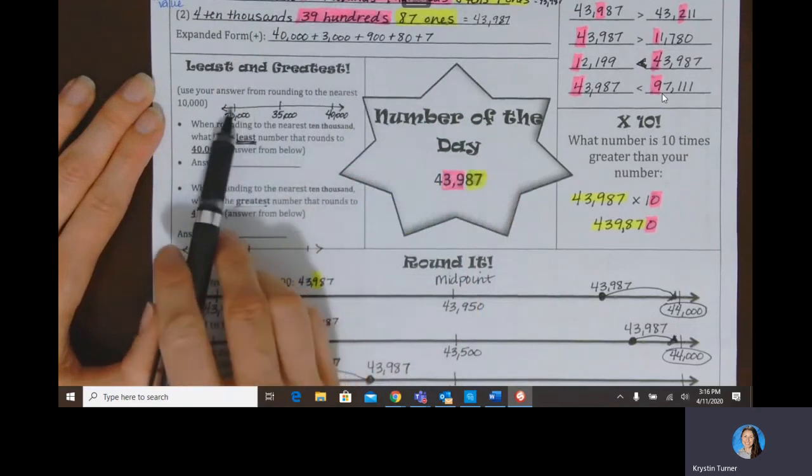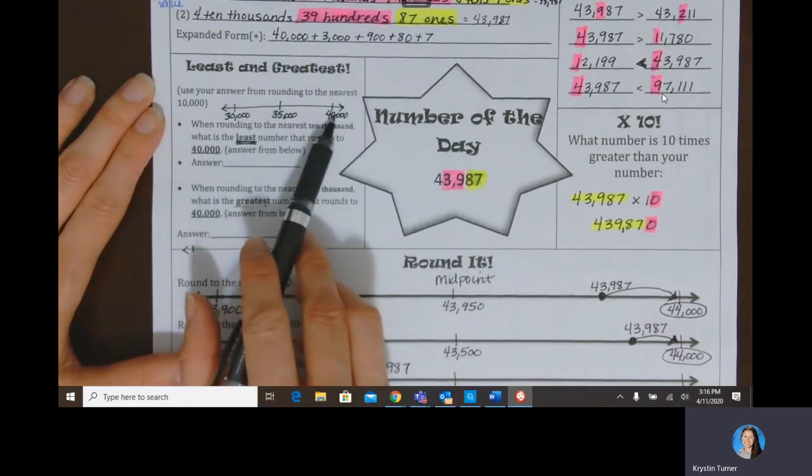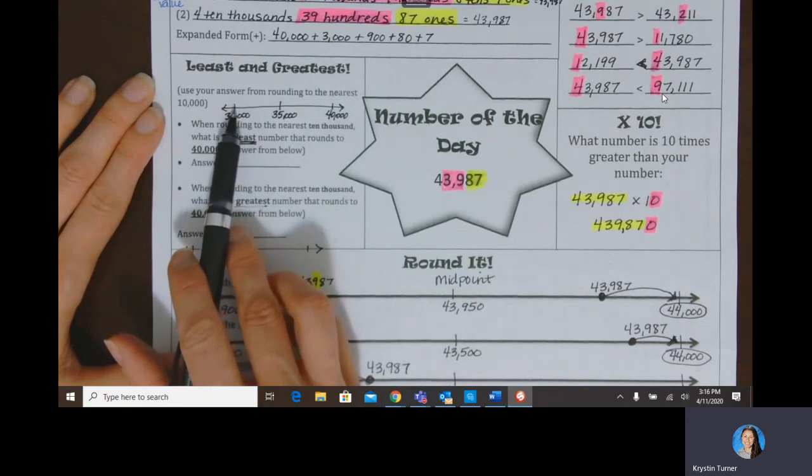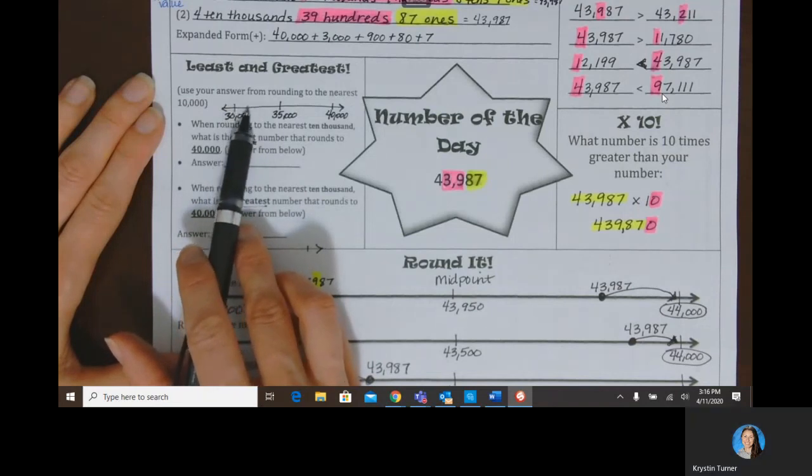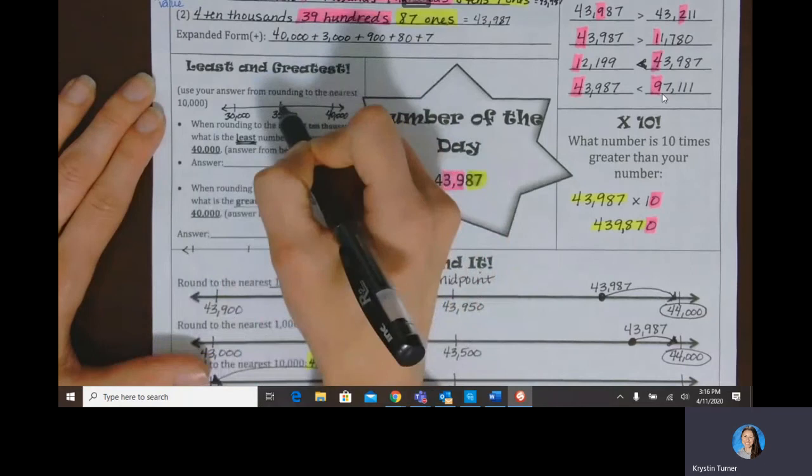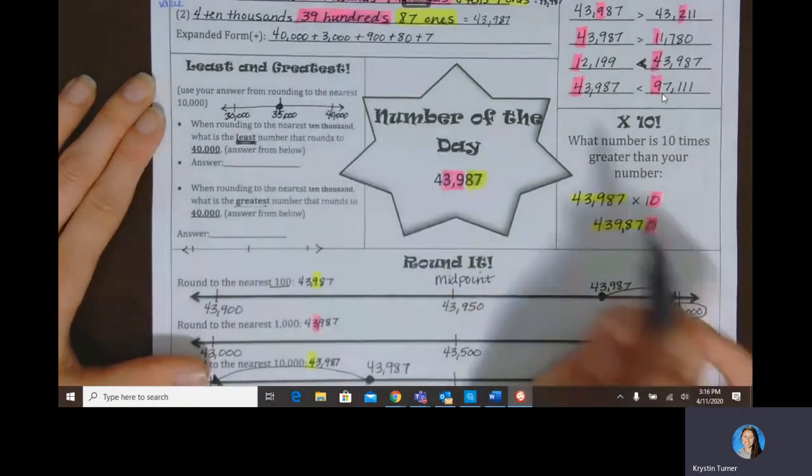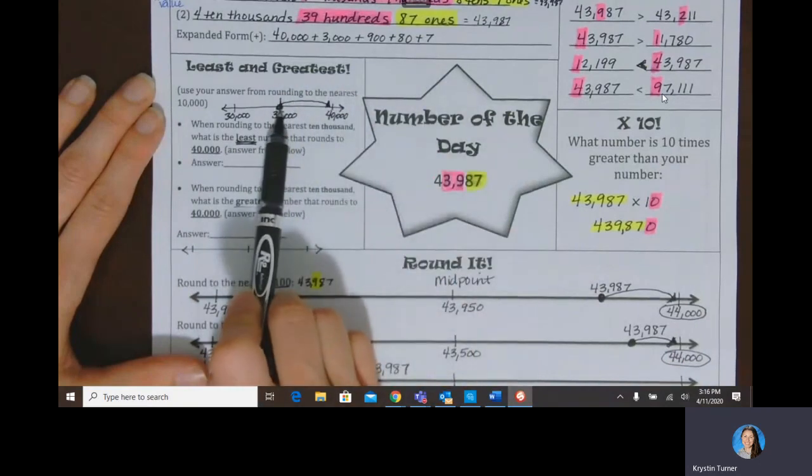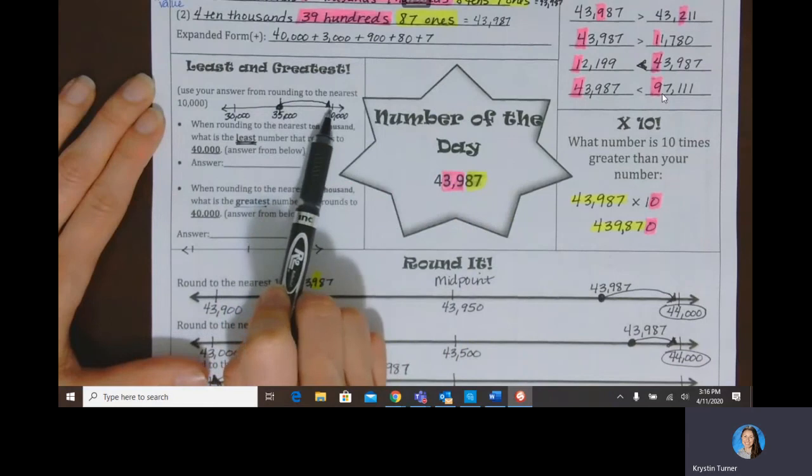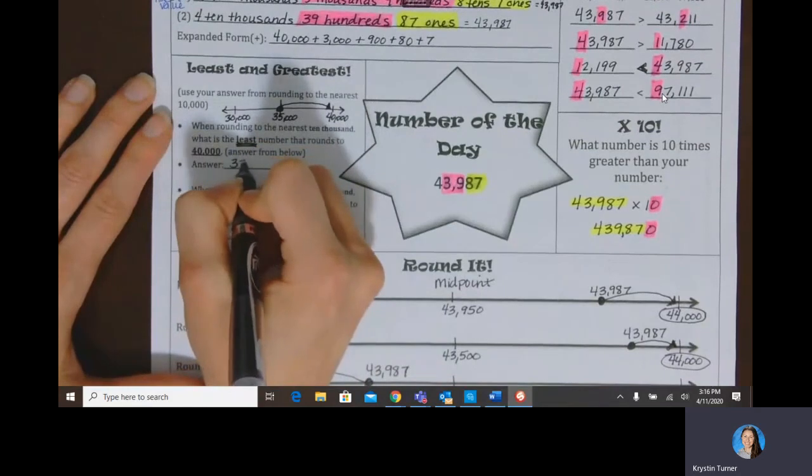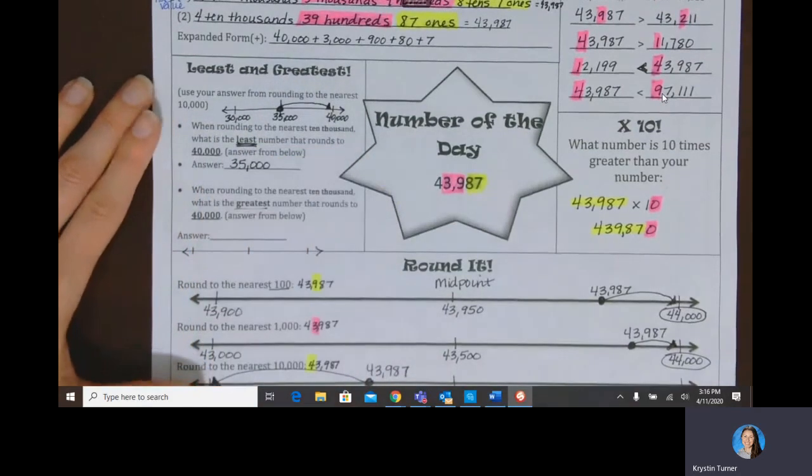Our midpoint is going to be 35,000. So I'm thinking what numbers round to 40,000 on this number line? So this number right here, like maybe 31,000 rounds down to 30,000. 32,000 rounds down to 30,000. And so far around to 30,000. Once I hit the midpoint right here at 35,000, that is the first number that would round up to 40,000. Now everything from 35,000 forward on this number line would round to 40,000. So my least number would be 35,000.